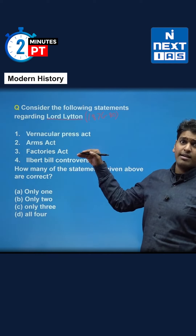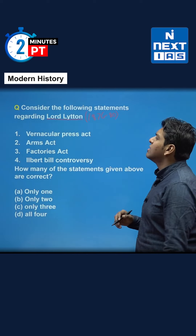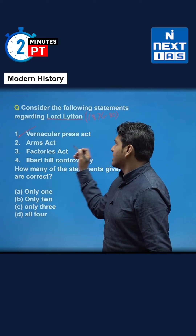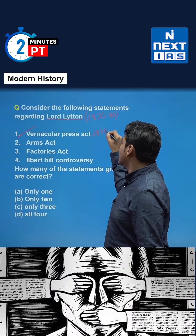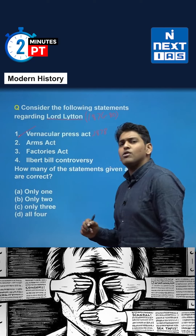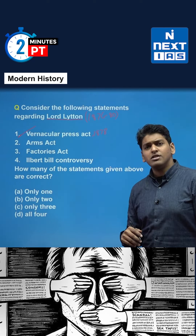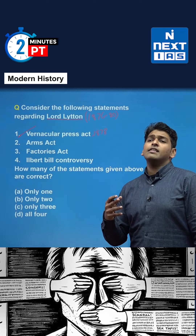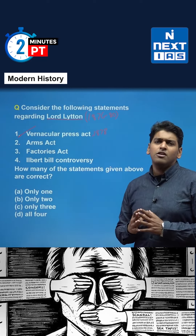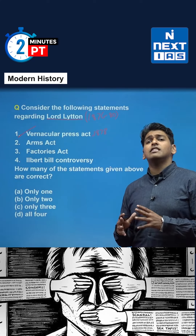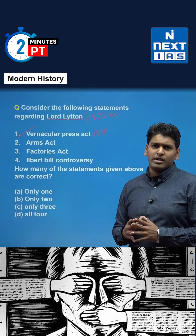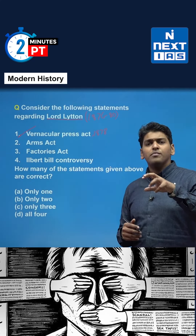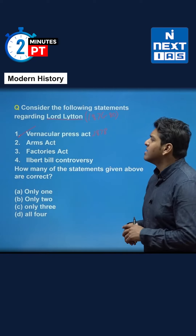The question asks which acts were passed under Lord Lytton's leadership. The first option is the Vernacular Press Act — this is correct, as it was passed in 1878. This act brought a number of restrictions on the nationalist press; criticizing the government was seen as inciting sedition, and the vernacular media was heavily stifled.